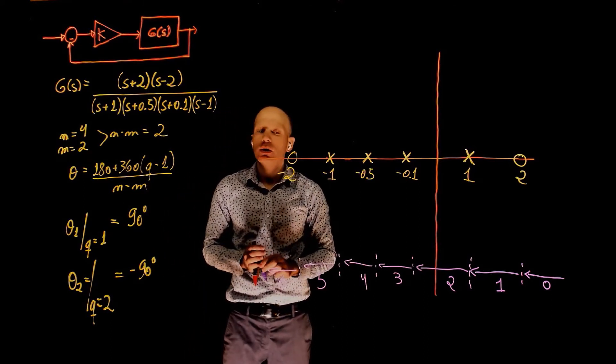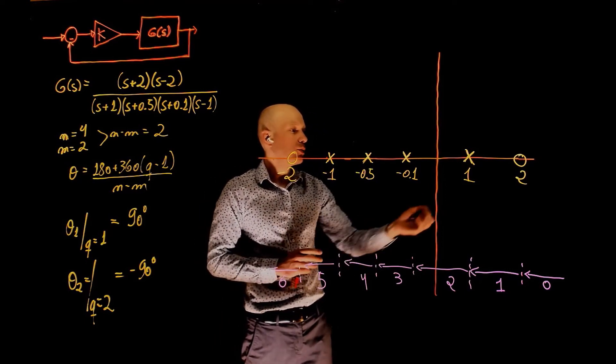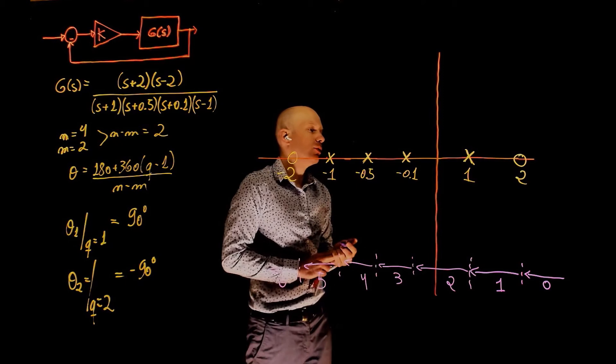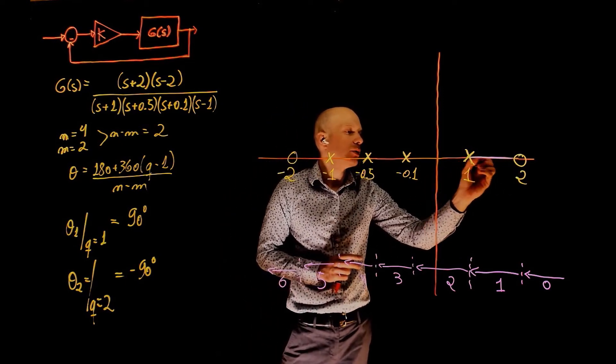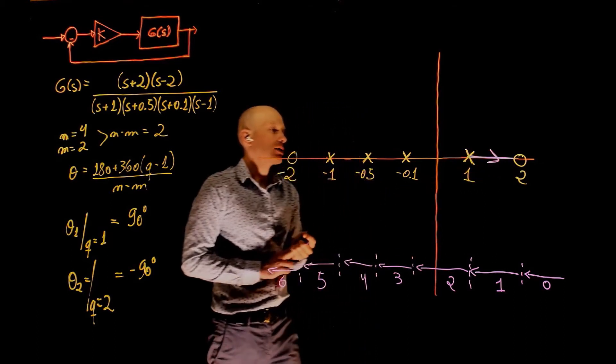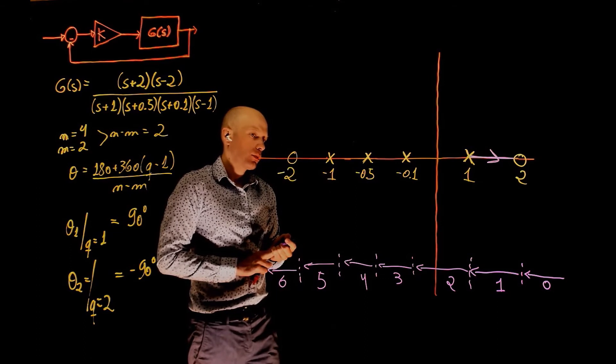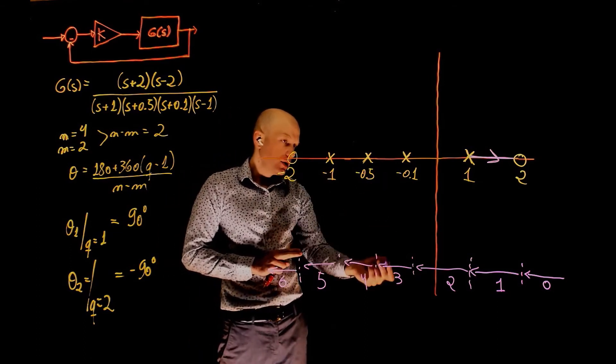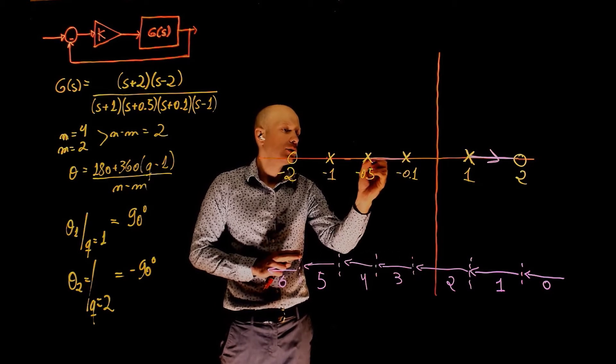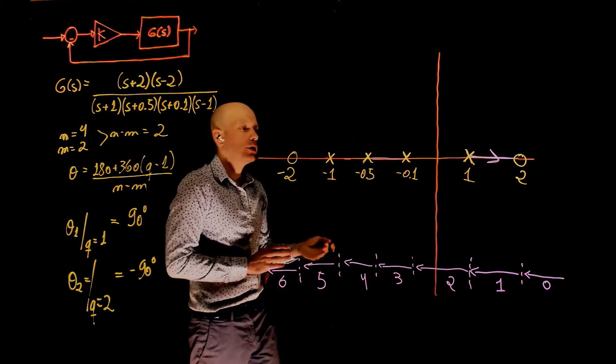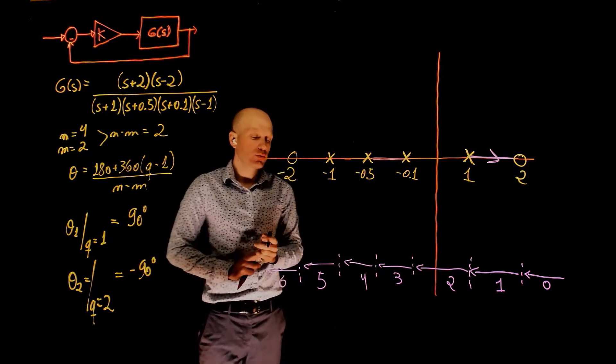We can now determine the root locus for some of them. Because there is a root locus between this pole and this zero, we can easily say that this pole will migrate to the zero. As k goes from zero to infinity, same can be said here because we have two poles. These two poles will have to come together and go to infinity following the asymptotes that we calculated here. Let's come back to this one later.